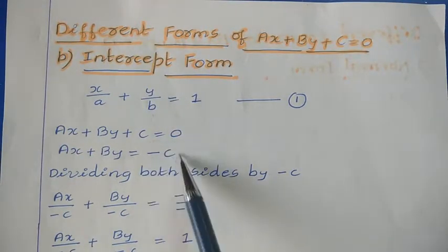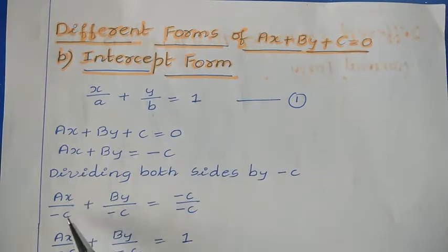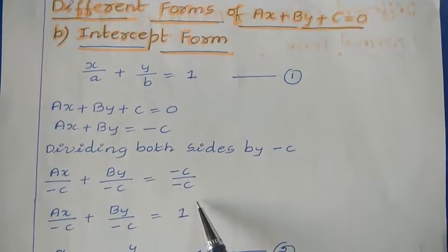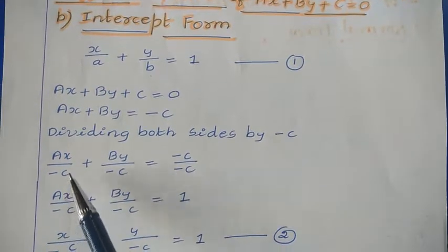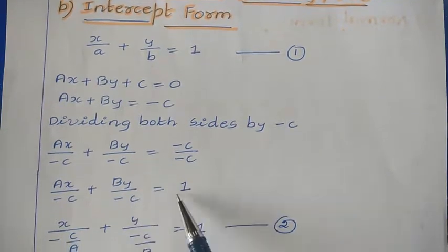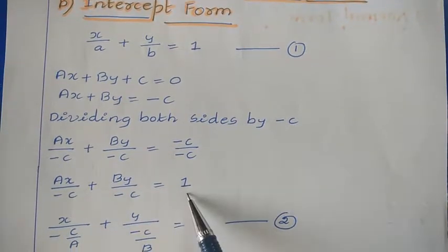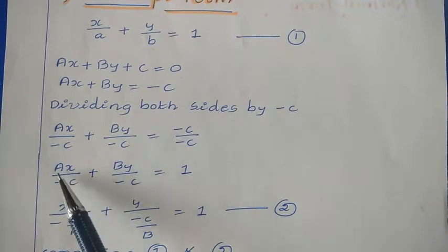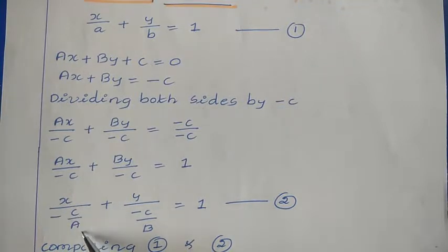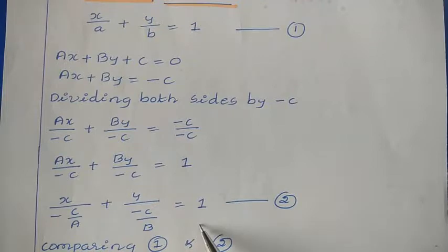Dividing gives AX divided by minus C plus BY divided by minus C is equal to 1. We can rewrite this as X divided by (minus C over A) plus Y divided by (minus C over B) is equal to 1.